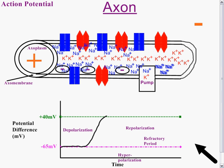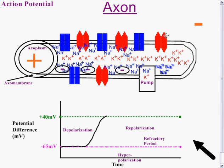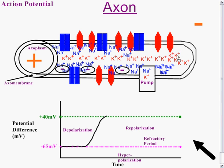Now that the sodium channels have closed, part two of the action potential happens, which is repolarization. At this point, the potassium channels open. The potassium, which is of higher concentration on the inside, can now diffuse out. On the trace of the oscilloscope — which is measuring the potential difference — when the potassium channels opened, we're going to see a downward curve for repolarization.